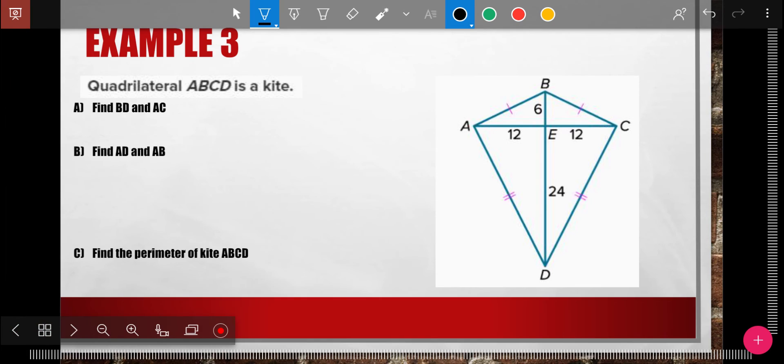Last example. This one is also a kite. BD. Where is BD? B to E is 6. E to D is 24. So segment addition tells me the whole thing. 6 plus 24, the whole thing is 30. And so BD equals 30.